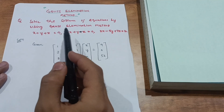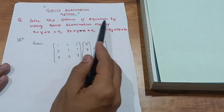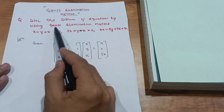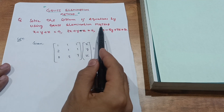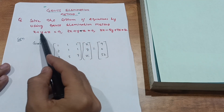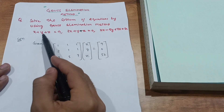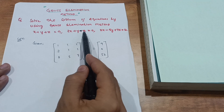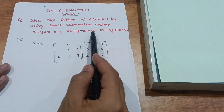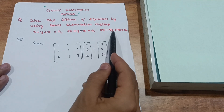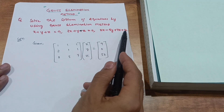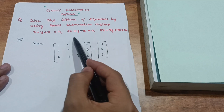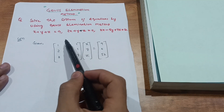Questions will be like: solve the system of equations using Gauss elimination method. The equations given are: x plus y plus z equals 9, 2x plus y minus z equals 0, and 2x minus 5y plus 7z equals 52. These are the system of equations you need to solve.